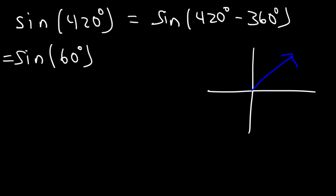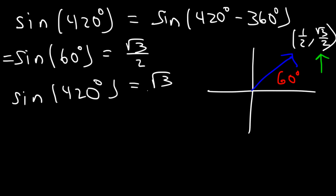And based on the unit circle, at 60 degrees we have the point 1 half comma root 3 over 2. And sine is equal to the y value in a unit circle. So sine 60 is root 3 over 2, which means that sine 420 is also equal to the square root of 3 divided by 2.